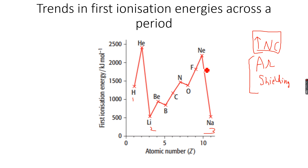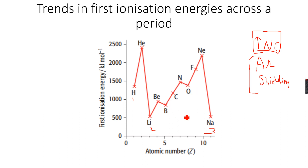In general, ionization energy increases across a period because nuclear charge increases while atomic radius and shielding are relatively constant. However, we see exceptions: from beryllium to boron the ionization energy decreases, and from nitrogen to oxygen the ionization energy also decreases.